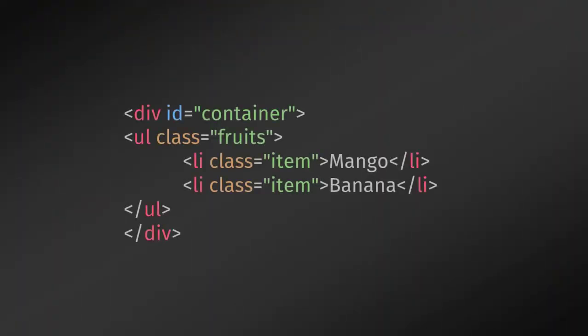Using JSX, it is very easy to create a React element just like the standard HTML syntax. We are going to create a fruit list. We will create a container division tag and put a ul tag with the class 'fruits'. Inside this ul tag, we will create two li elements with the class 'item' and specify fruit names.